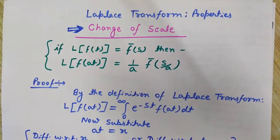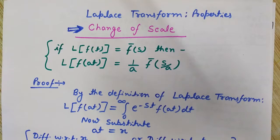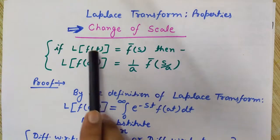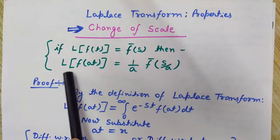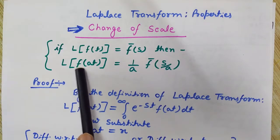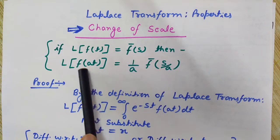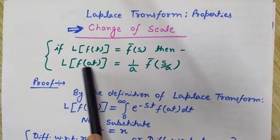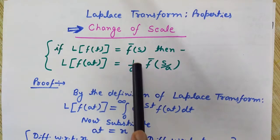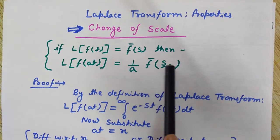Hey, welcome to Engineering Made Easy. Lalith here. Today we will see what happens when we change the scale of a function. If I denote the Laplace transform of f(t) by F-bar(s), then what would be the Laplace transform of f(at)? That is, on scaling — on changing the scale — the Laplace transform of f(at) will be (1/a) * F-bar(s/a).